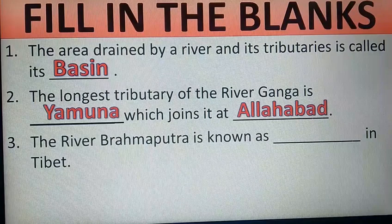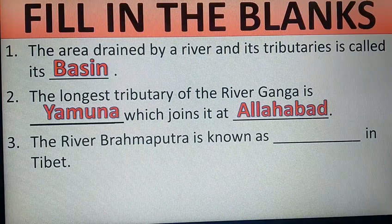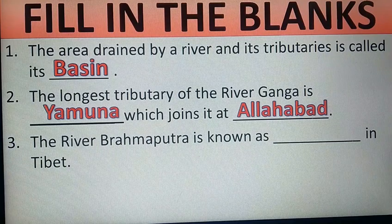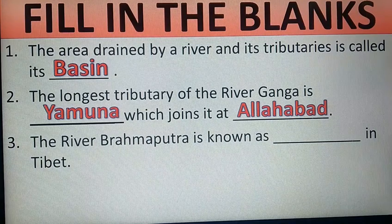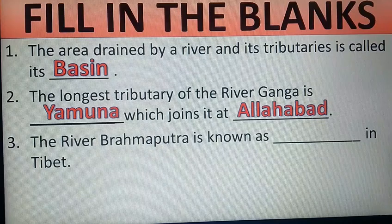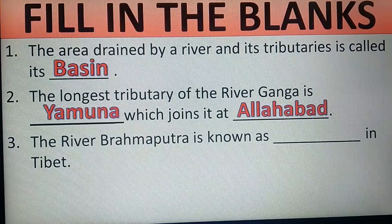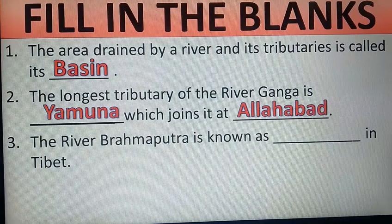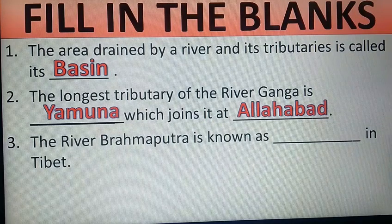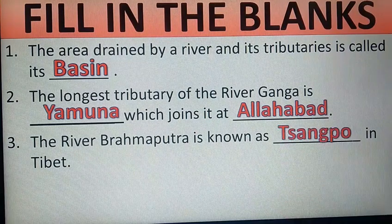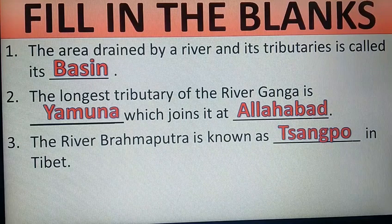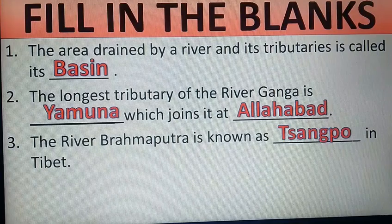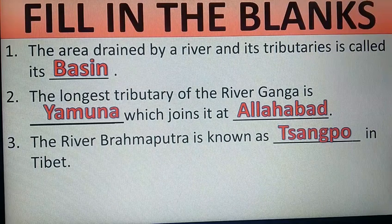The third point is: the river Brahmaputra is also known as dash in Tibet. River Brahmaputra starts from Tibet, and in Tibet the river Brahmaputra is known as Sangpo. The river Brahmaputra is known as Sangpo in Tibet.